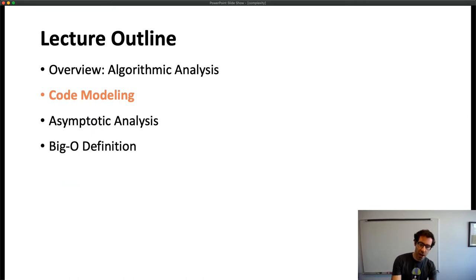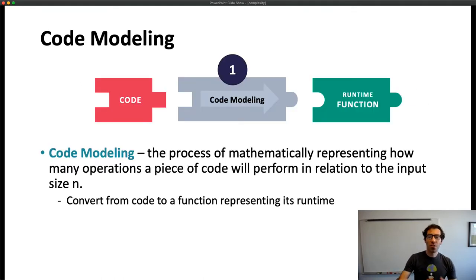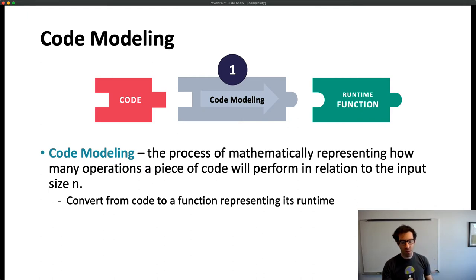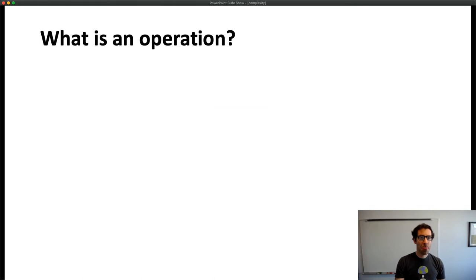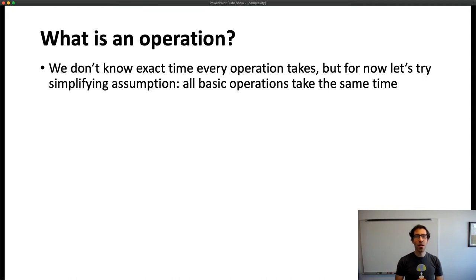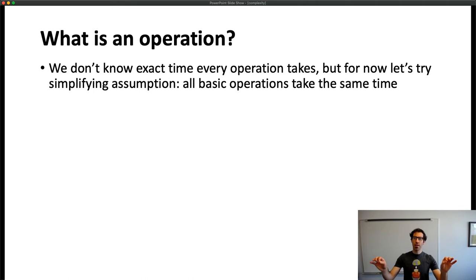That's the overview of algorithmic analysis. Now let's break down the components. First up is code modeling — the process of mathematically representing how many operations a piece of code will perform in terms of the input size n, converting from code to some function.